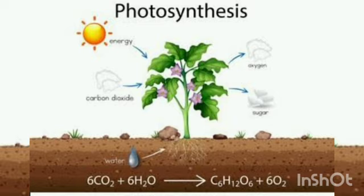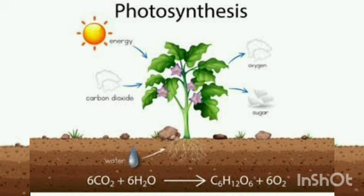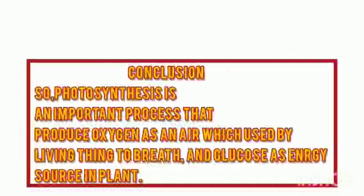Julius Robert Mayer in 1845 was the first scientist to recognize that green plants have the power to utilize light energy and convert it into chemical energy of organic matter with the evolution of oxygen. In 1862, it was stated that starch is a photosynthetic product. The term photosynthesis is derived from 'photo' meaning light and 'synthesis' meaning building up. Green cells synthesize enormous amounts of food material with the help of light energy, preferably from the sun. This synthesis of food is called photosynthesis.